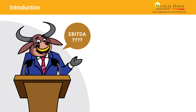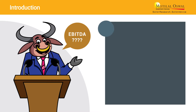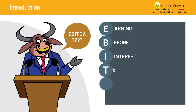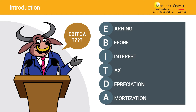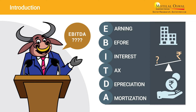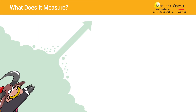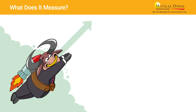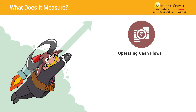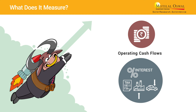Have you ever come across the term EBITDA? EBITDA stands for Earnings Before Interest, Tax, Depreciation and Amortization. It is a measure used often to value businesses and measures the operating performance of a company. Deductions like interest, tax, depreciation and amortization are not considered, as they are not operating in nature.